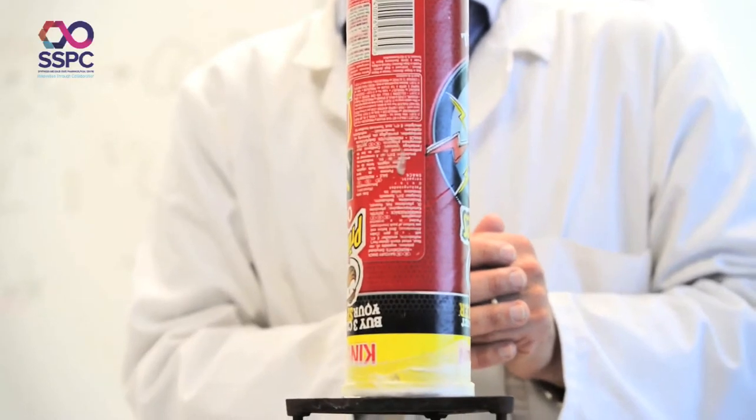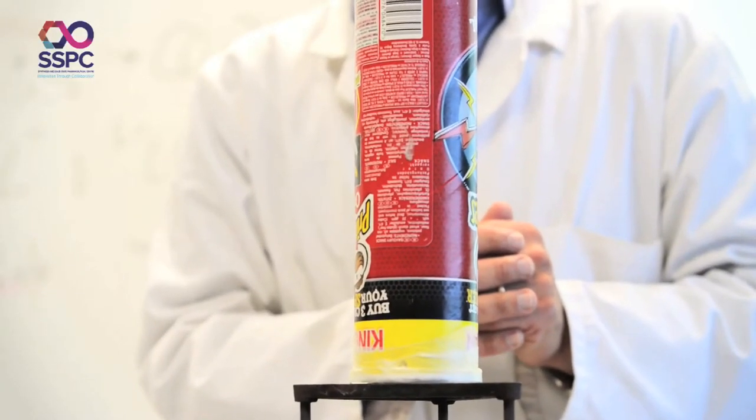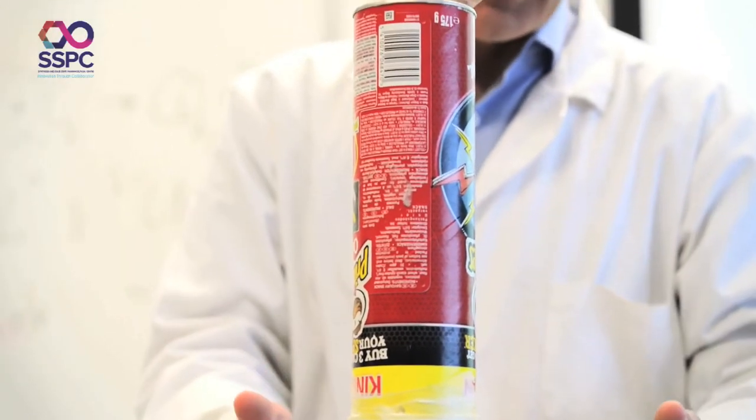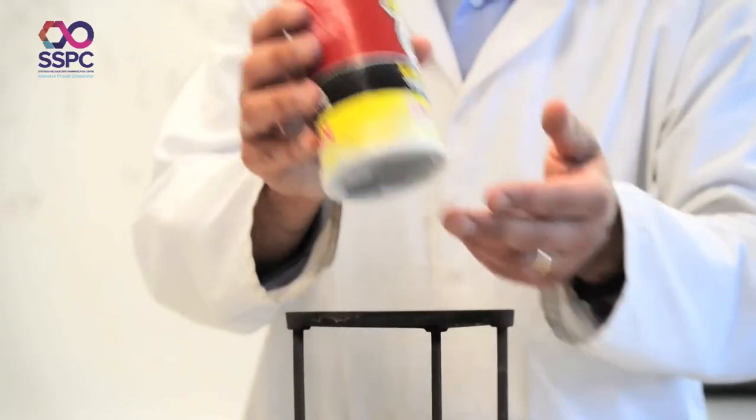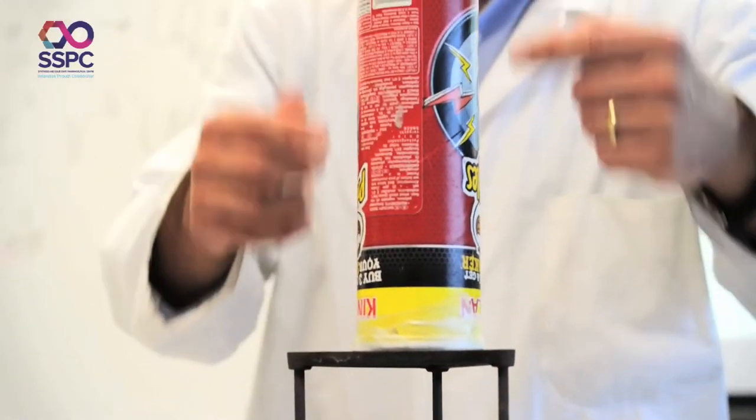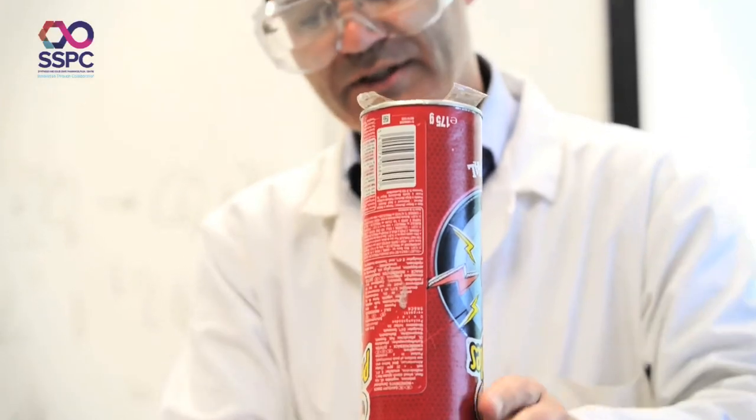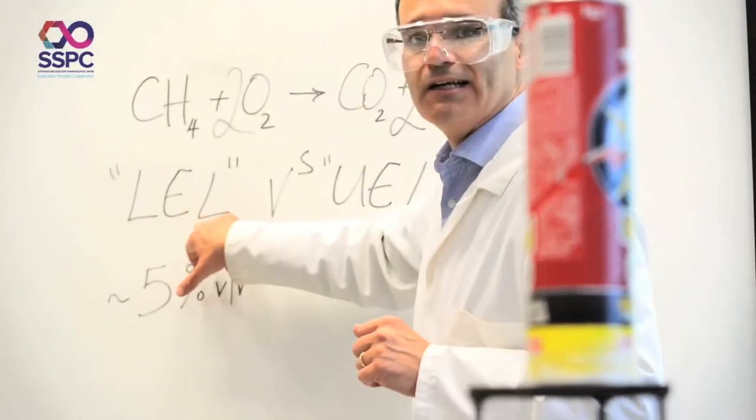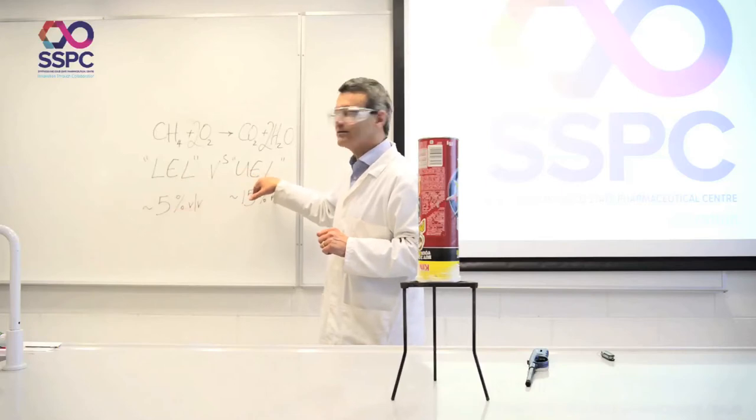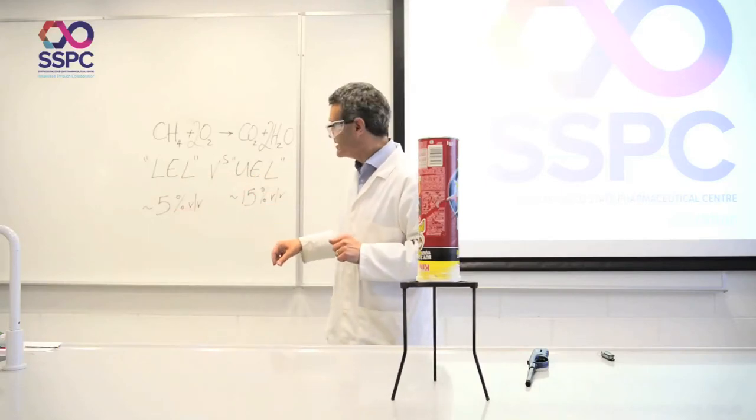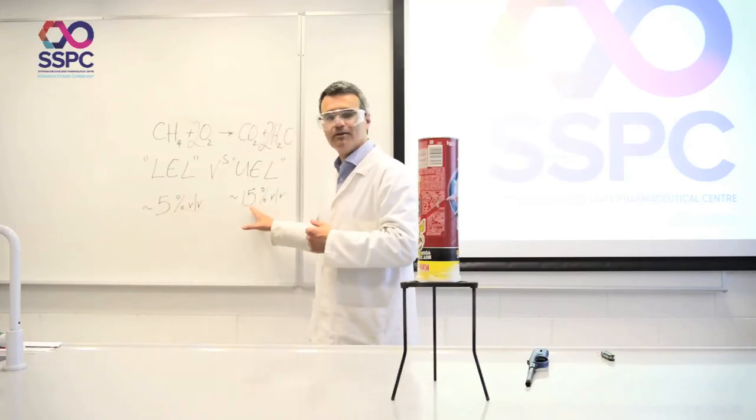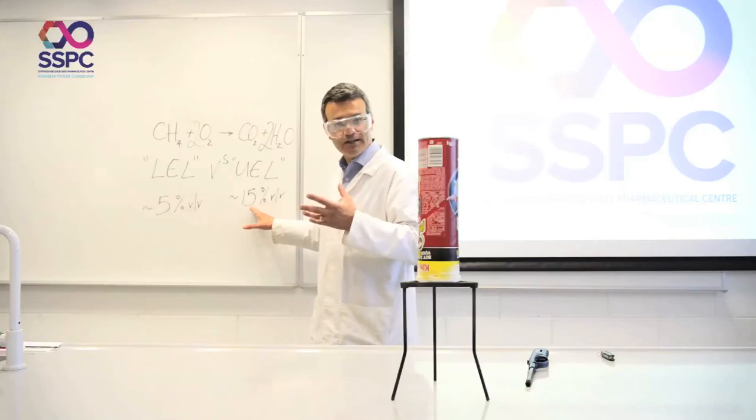What's happening in this experiment is you have combustion in progress and air is being drawn in through the bottom hole of the tube and it's mixing with whatever methane is left. Now there's a property of gases and vapors which relates to their explosivity, and each gas or vapor will have a lower explosion limit LEL and an upper explosion limit UEL. And in the case of methane, if you have anything between 5 and 15 percent volume in air, it'll explode.